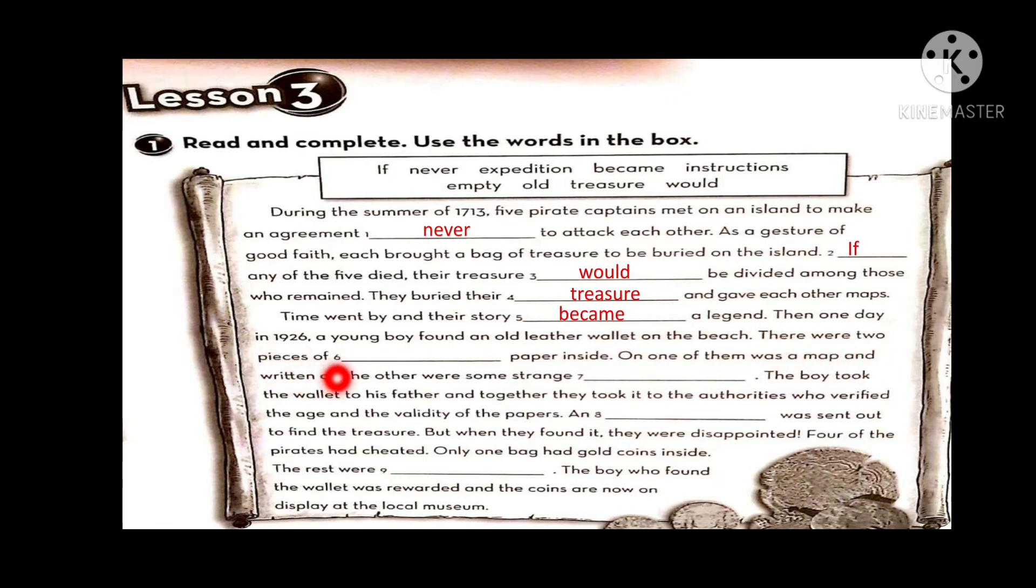There were two pieces of old paper inside. One of them was a map. What did the boy find in the wallet? He found a map and written on the other were some strange instructions. The boy found a map and some strange instructions.